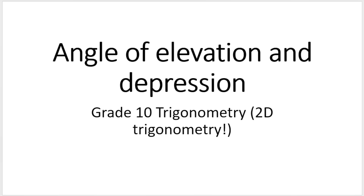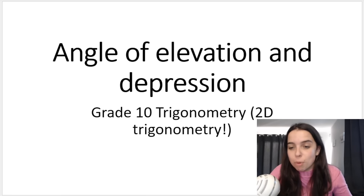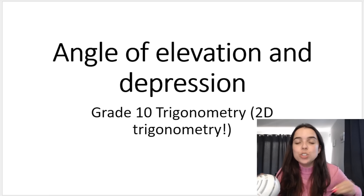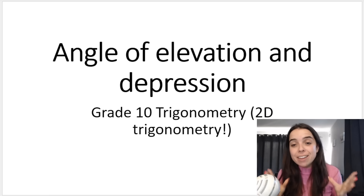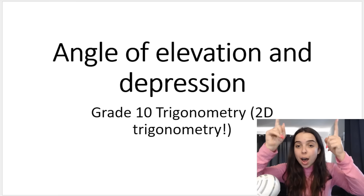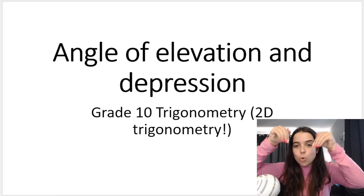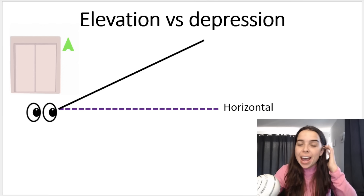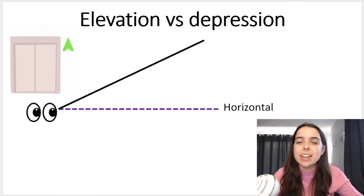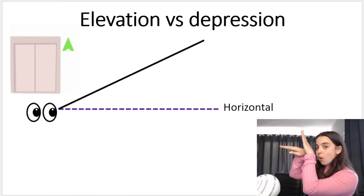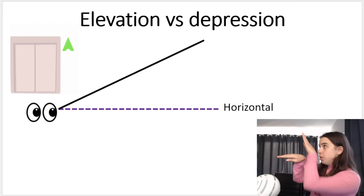Now, what do we mean by angle of elevation and depression, because we're going to integrate this into our trig 2D problems? You need to understand the words elevate and depress. If I say elevate — like taking an elevator — we're going up. To elevate is to go up. Depression — depress — go down. The angle of elevation is the angle between the line of sight and the horizontal, but it's above the horizontal, between that horizontal and the line of sight.